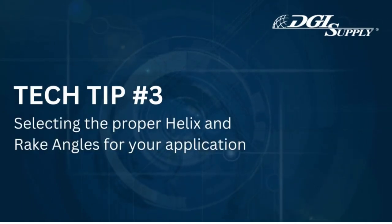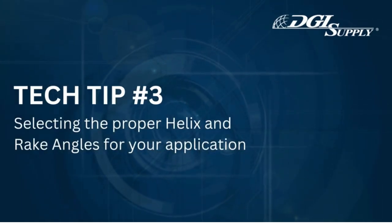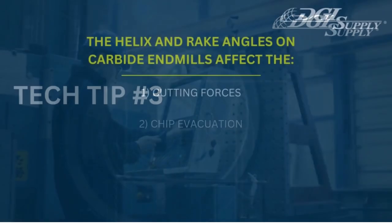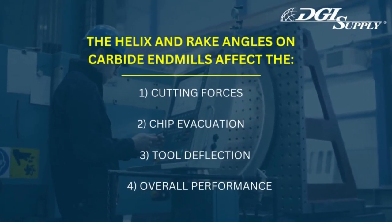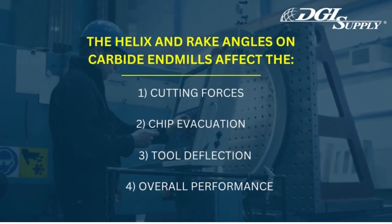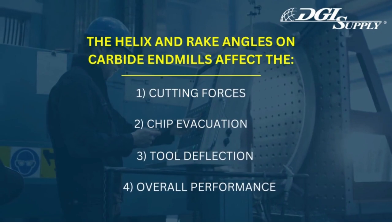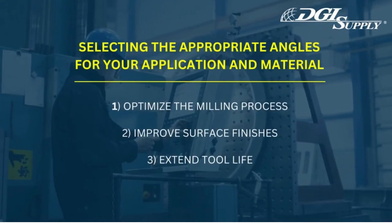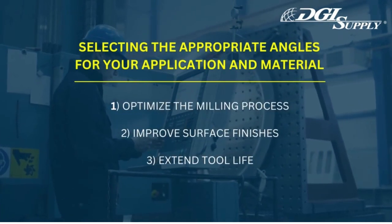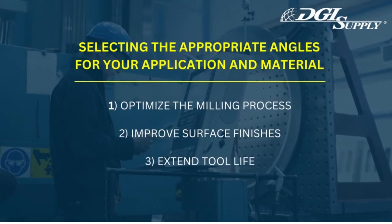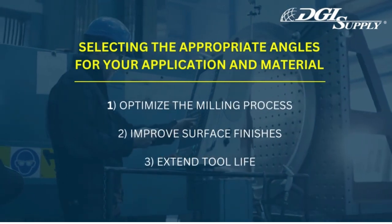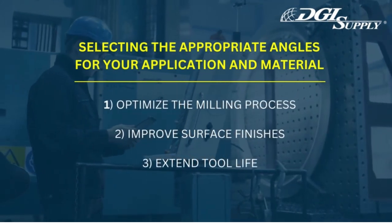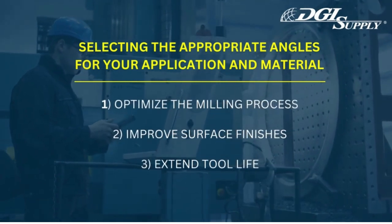Tech Tip 3: Selecting the proper helix and rake angles for your application. The helix and rake angles on carbide end mills affect the cutting forces, chip evacuation, tool deflection, and overall performance. Selecting the appropriate angles for your application and material can help with optimizing the milling process, improving surface finishes, and extending tool life.